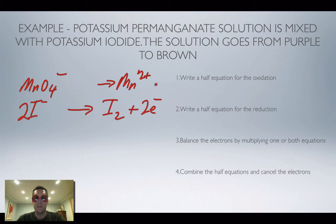Once you've got those two bits there, you can actually look up the equation on the data sheet. It's this one that we've seen before. 8H plus and we've got five electrons on this side.